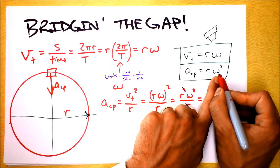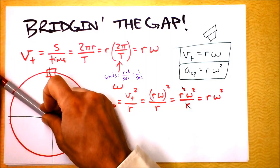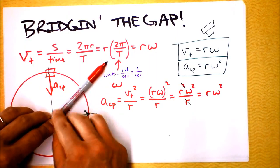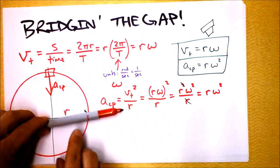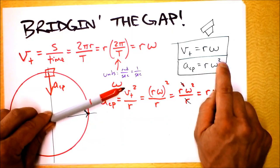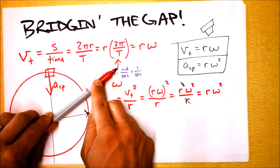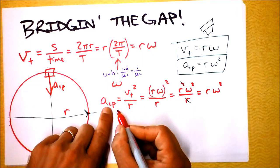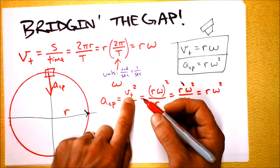In contrast, when we look at a_CP = rω², we're assuming angular speed stays constant. Everything is on the same rotating object, so as r increases, tangential speed increases too. The further out you go, the faster your tangential speed, and therefore you need more centripetal acceleration to stay in the circle. These are two different physical scenarios — one holds v_T constant, the other holds ω constant.